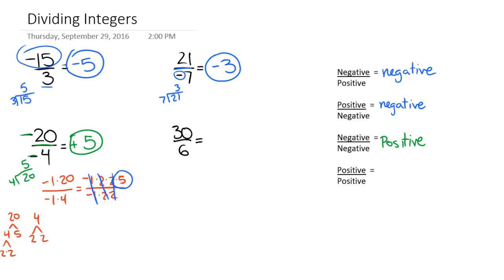And then finally, the one that you're used to probably more than any of the others, this says 30 divided by 6, which is 5. And so a positive divided by a positive is a positive.